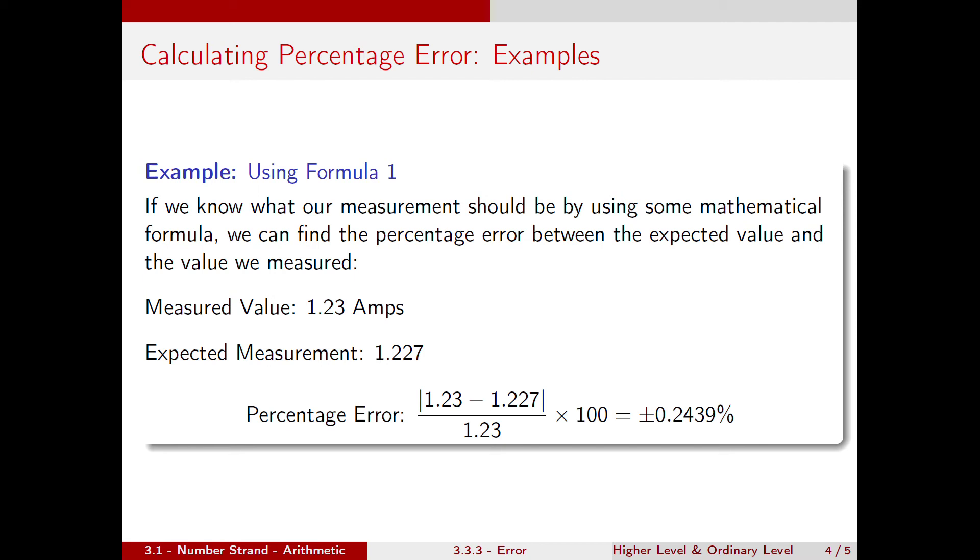Again, the expected measurement of 1.227—as our reader isn't accurate up to this decimal point, we don't know what we've missed out on. Hence why the percentage error is needed, so that we know potentially how much we are off by, in what percentage.